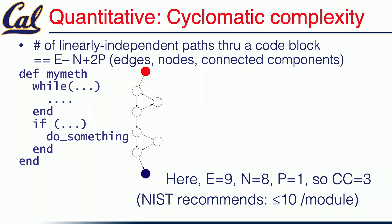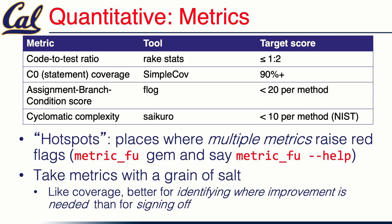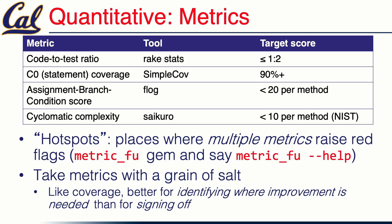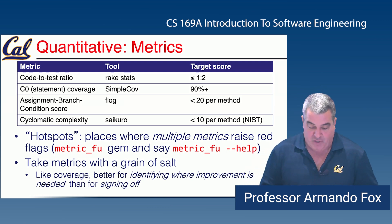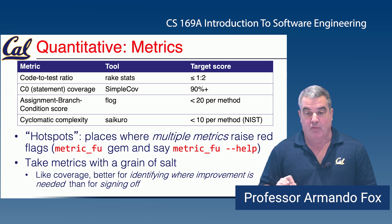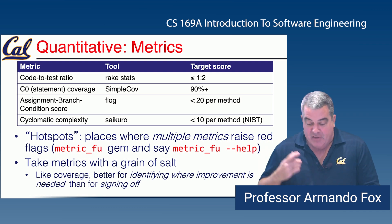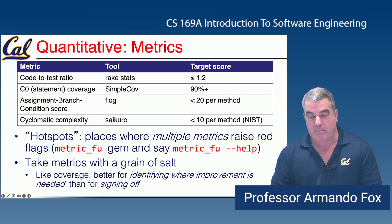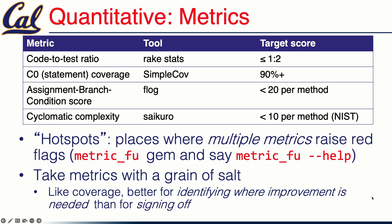The idea behind these quantitative metrics is not that any single metric is the truth or the most important one. What you're looking for is places where multiple metrics are giving you yellow flags about your code. To do that, there is a gem called MetricFu, which collects a whole bunch of different static code analysis metrics. If you run it, it will give you not just the metrics shown here but five or six different others. You're looking for hotspots — places where there are multiple things wrong with your code.